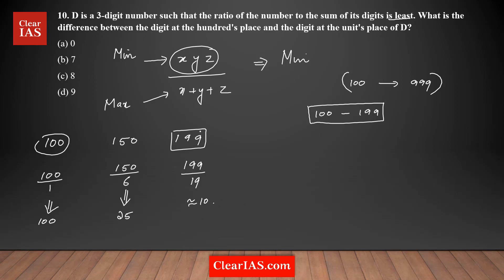Comparing these three numbers, we can clearly say that the ratio of the number to the sum of the digits is minimum for 199. Similarly, if I take the range from 200 to 299, the same pattern applies — 299 will have the minimum ratio in that set.